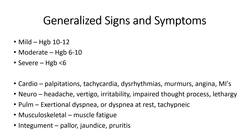Musculoskeletal manifestations include muscle fatigue — if muscles aren't getting enough oxygen, they won't function well. Skin manifestations include pallor and possible jaundice, especially when red blood cell breakdown or hemolysis causes bilirubin levels to rise as the liver concentrates the breakdown products. Patients can appear jaundiced with significant hemolysis. Pruritus (itching) may also be present.